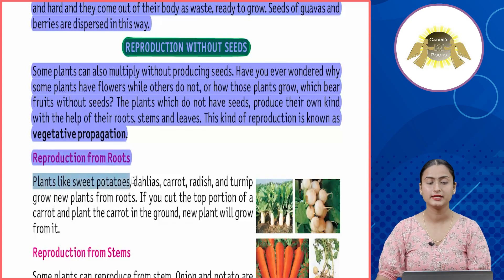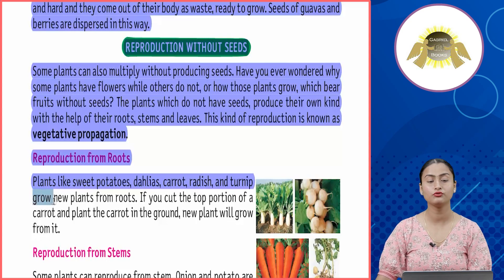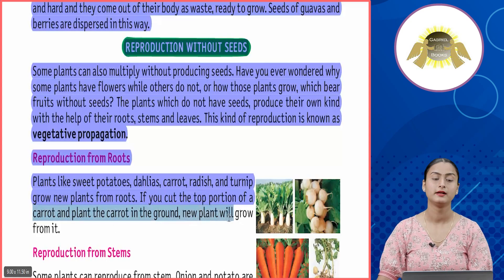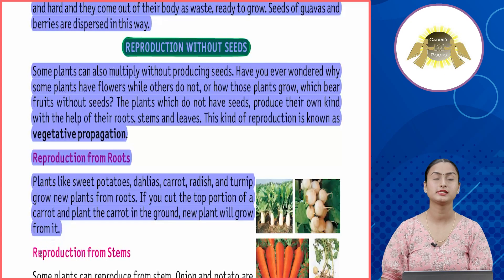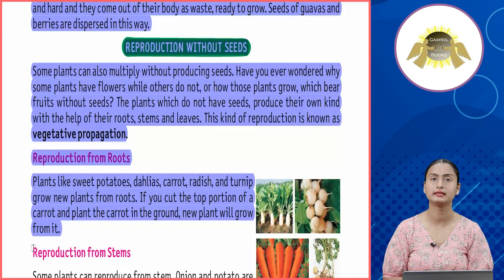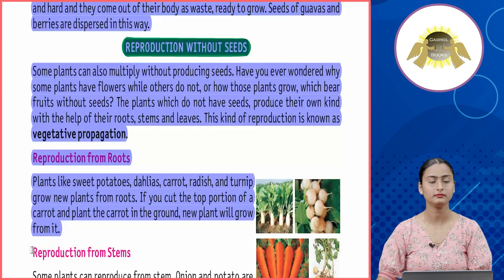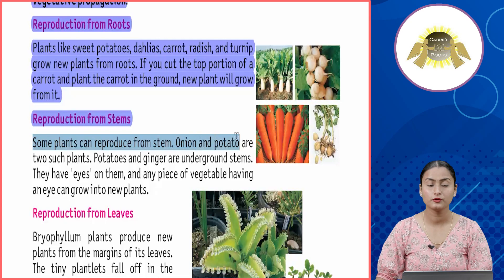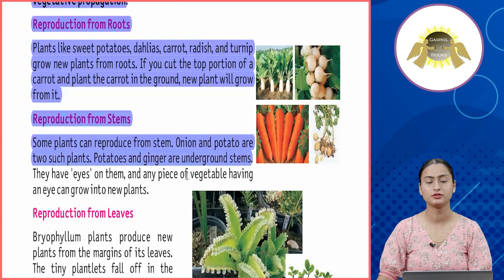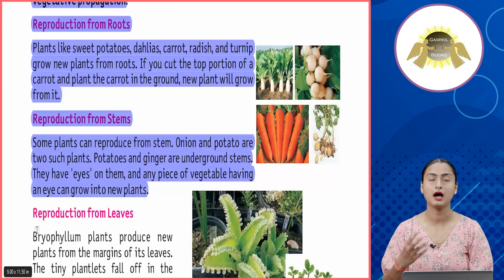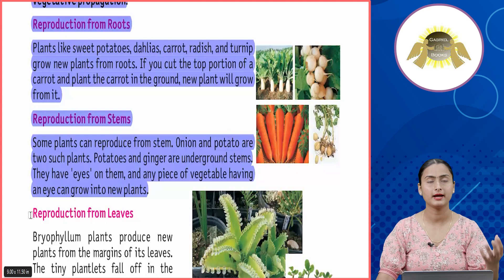Reproduction from roots: plants like sweet potatoes, dahlias, carrots, radishes, and turnips grow new plants from their roots. If you cut the top portion of a carrot and plant it in the ground, a new plant will grow from it. Reproduction from stems: some plants such as onions and potatoes reproduce from their stems. Potatoes and ginger are underground stems with eyes on them, and any piece having an eye can grow into a new plant.